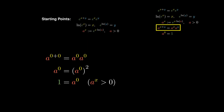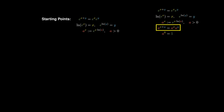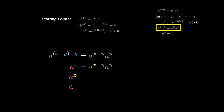Furthermore, if instead we consider the expression a to the x minus y plus y, we can still apply the addition to multiplication property. And on the left side, the power reduces to x. Dividing out by a to the y, we obtain a to the x minus y equals a to the x over a to the y.